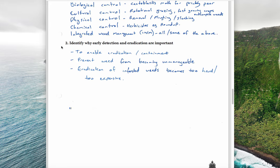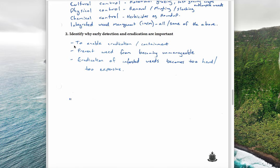Secondly, it's important to identify why early detection and eradication are important. Early detection enables eradication and prevents a weed from becoming unmanageable. If you go for a walk in the bush, you'll see plenty of weeds that have taken over and can no longer be controlled. It's better to detect them early and try to eradicate them before it becomes too hard and too expensive.